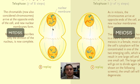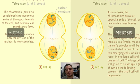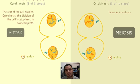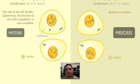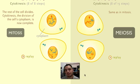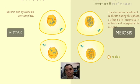Now in telophase you can see two identical nuclei in mitosis and two different nuclei in meiosis — that's the point of each process. Then the cytoplasm is split, so this must be cytokinesis of mitosis and cytokinesis one of meiosis, and we cut all the way through.